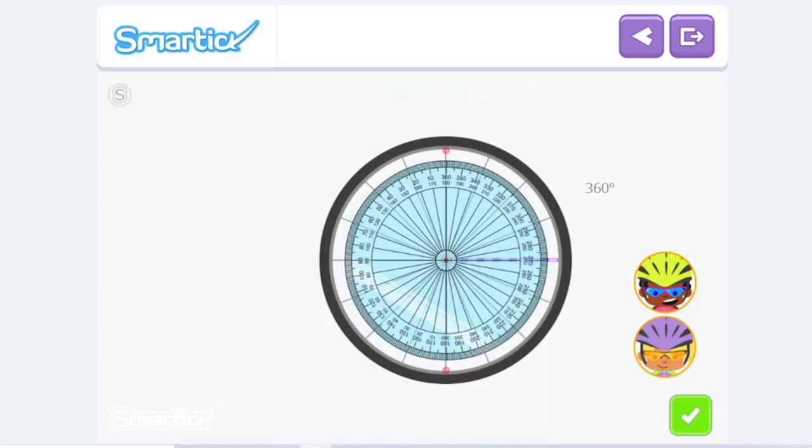Excellent. A complete angle measures 360 degrees. The arc degree, which we use to measure angles, the sexagesimal system, is made by dividing the circumference into 360 equal parts. Each one of these parts is a degree. Now we know the measurement of a complete angle.